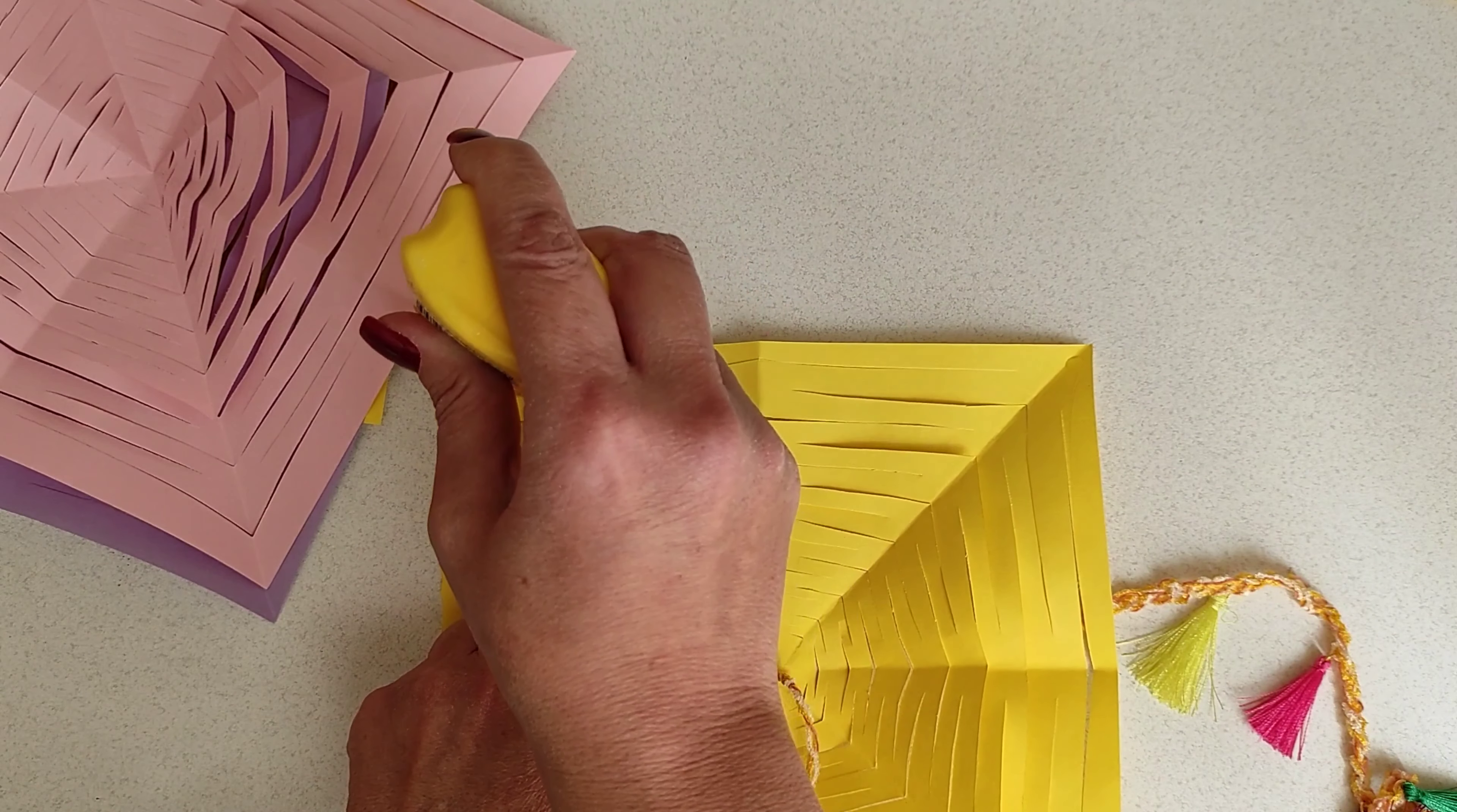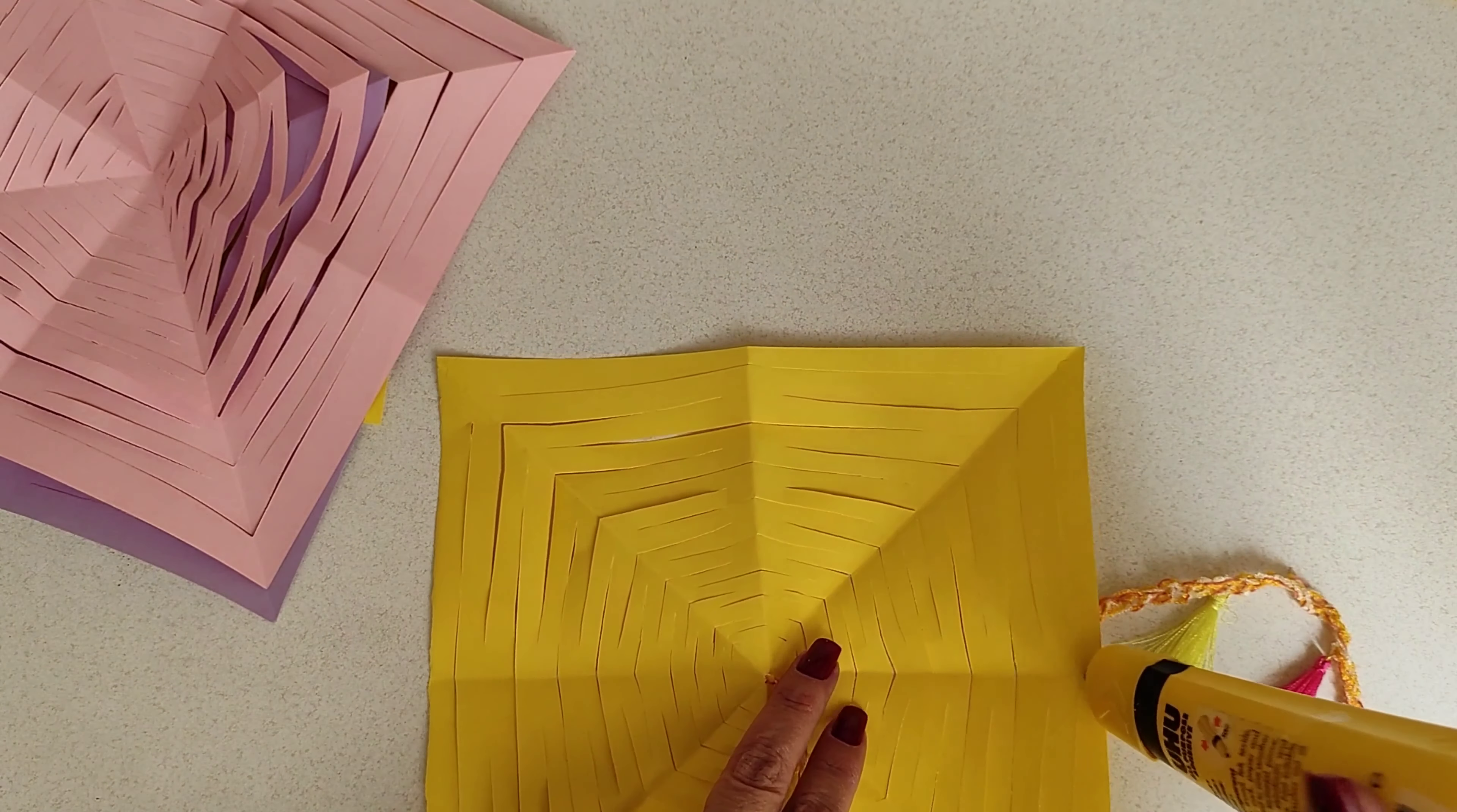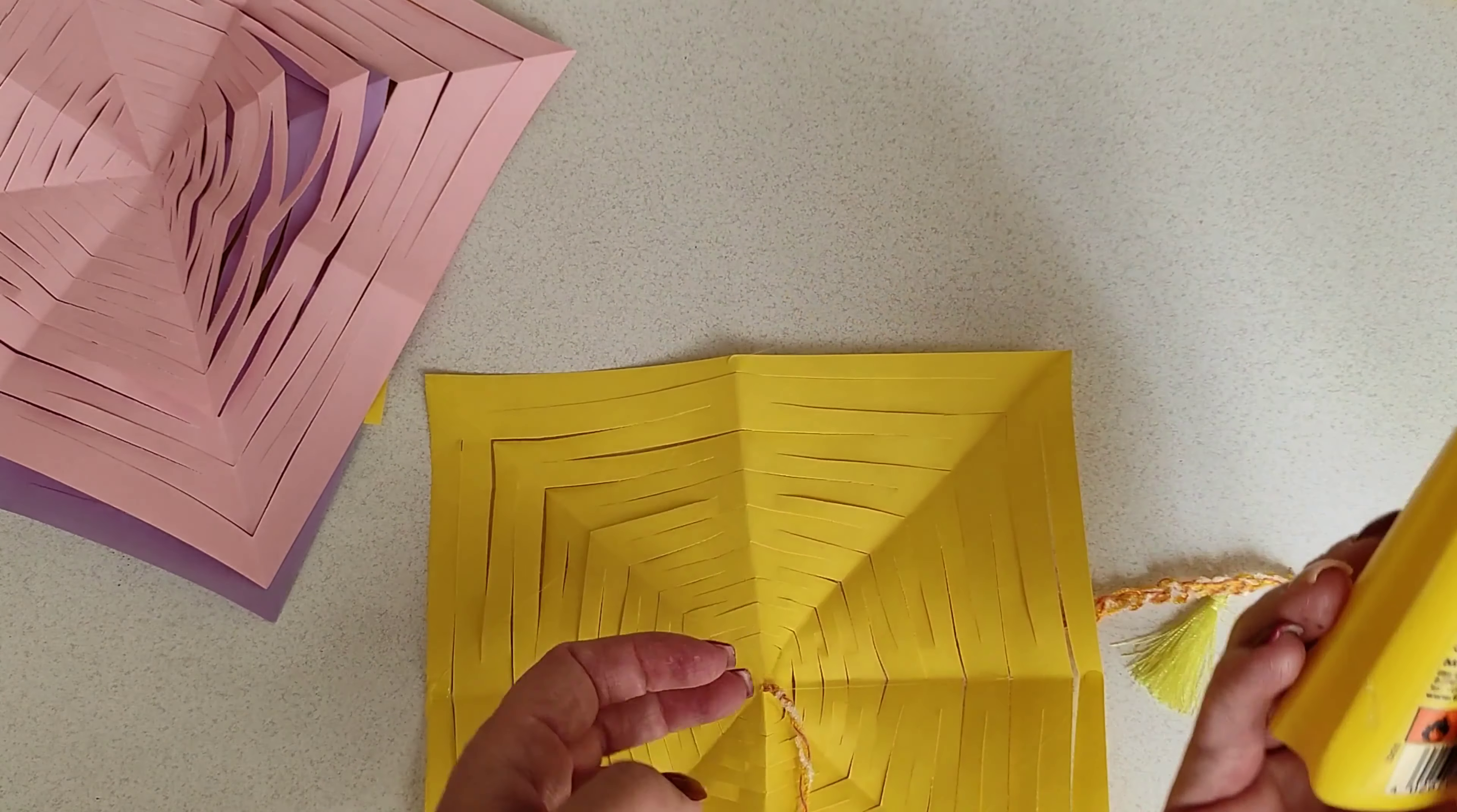We're putting some glue on each one of the corners and some on the sides of the last strip of paper and then we're going to stick two of these squared papers onto each other.